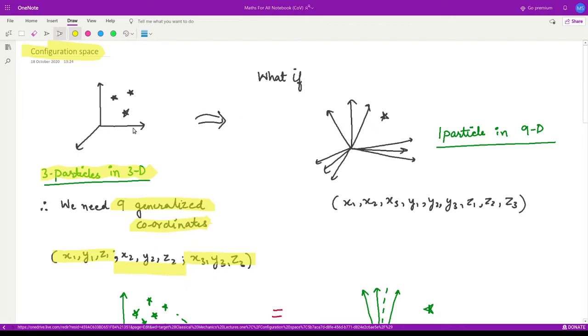Now what if I represent this same system as some different system where what do I do? Instead of taking three x's, what do I do now? I take corresponding to this x-axis, I take three x-axis. So say x1, x2 and x3. Instead of taking one y-axis, I take y1, y2 and y3 and same I do with z-axis. So now I have represented the same three particles which were in three dimension now as one particle in nine dimension. How cool is that?